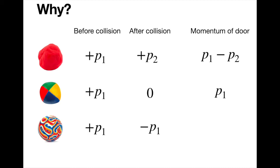However, we want to take the bouncy ball, it's again the difference between these two. So if we take negative P1 minus positive P1, that will tell us that the change in momentum for the bouncy ball is negative P1. So the momentum of the door is going to be 2P1.